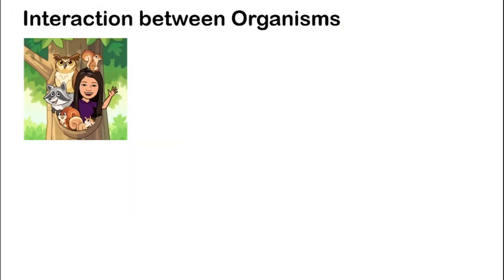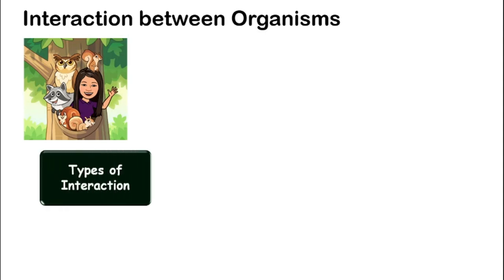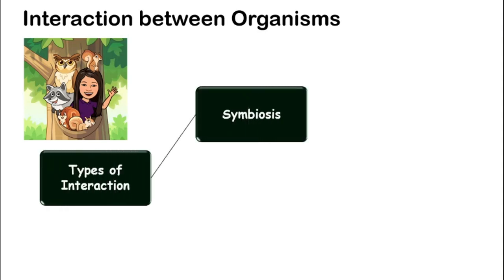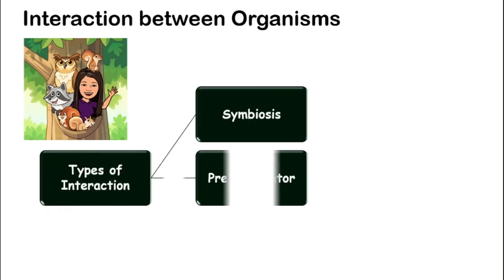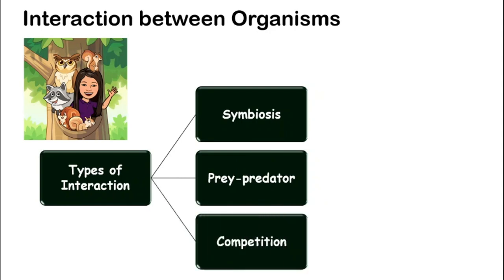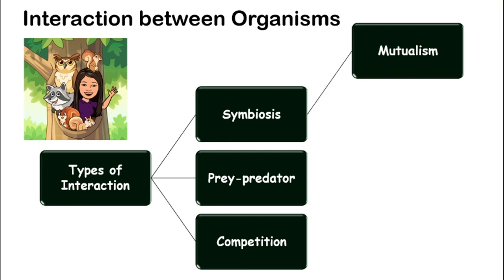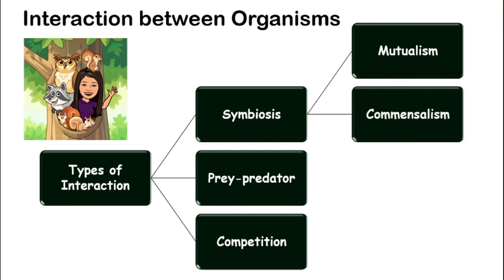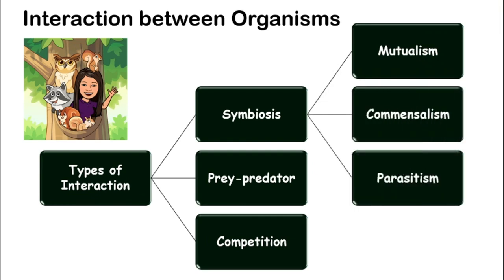There are a few types of interaction between organisms — three actually. We have symbiosis, predator-prey, and also competition. And there are also three different types of symbiosis: mutualism, commensalism, and also parasitism.